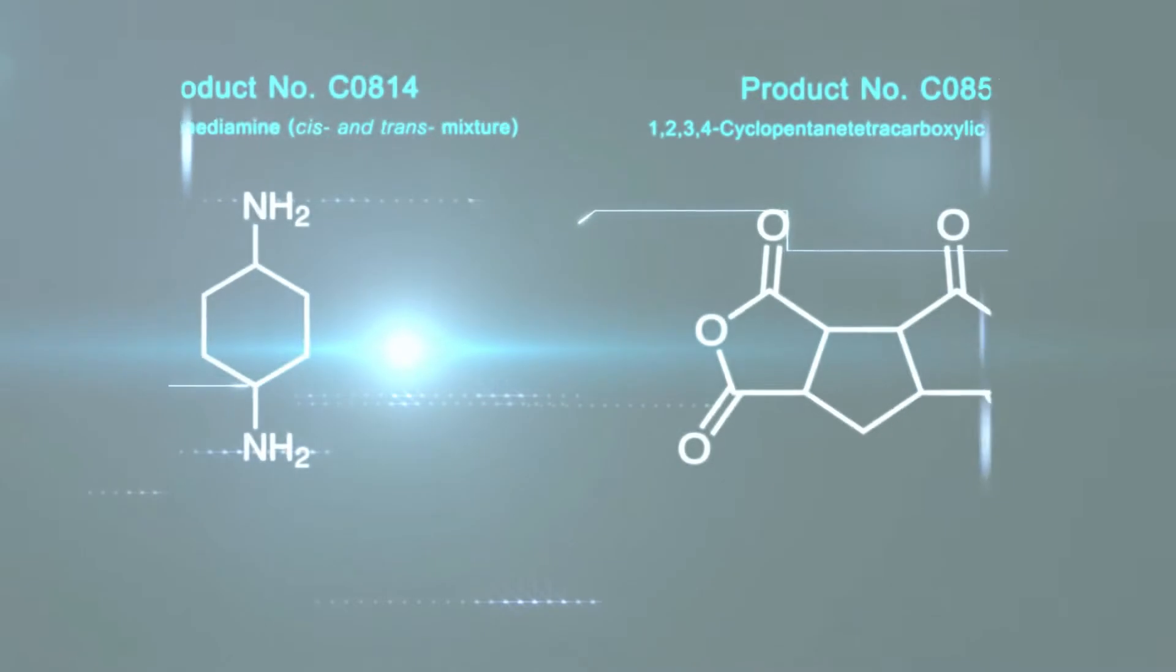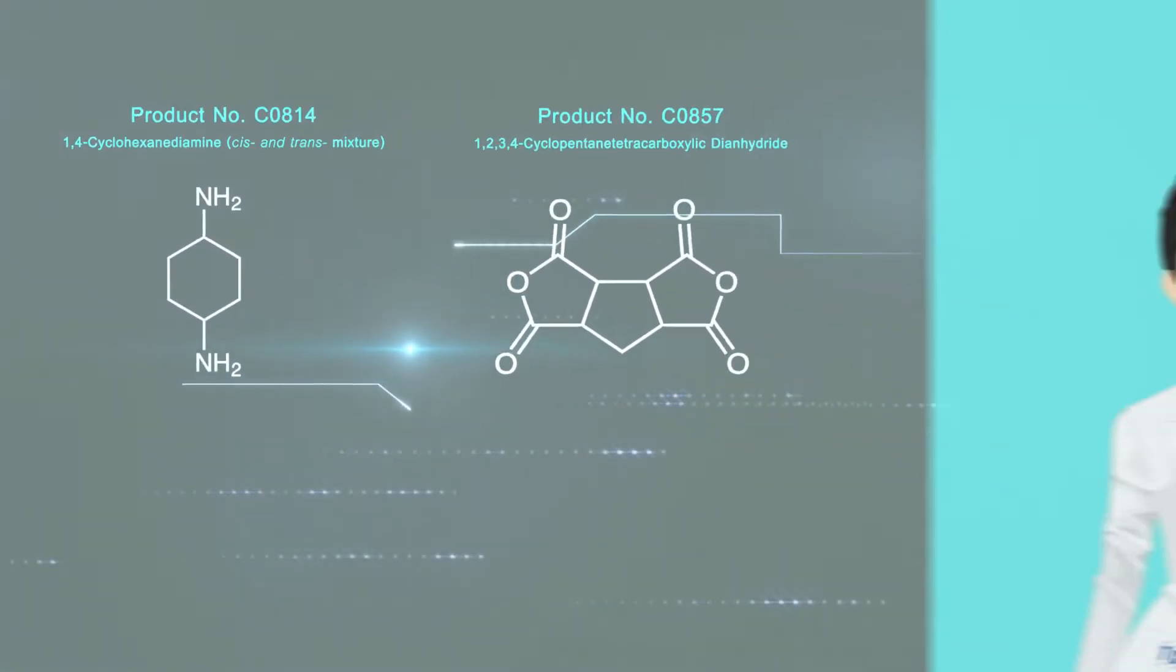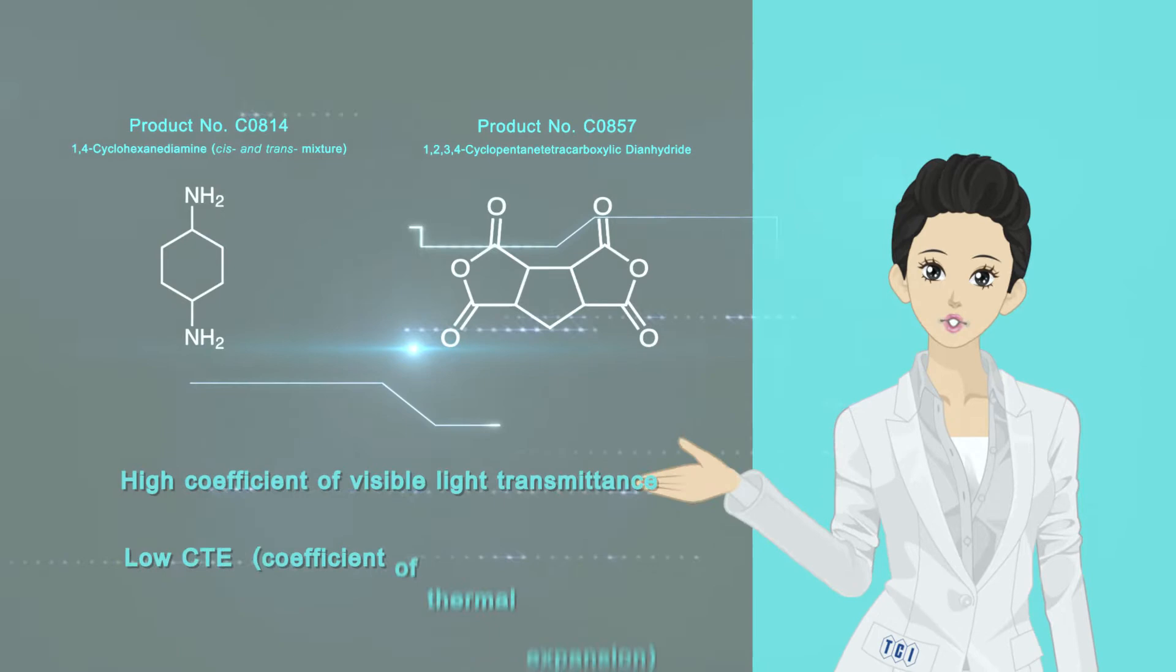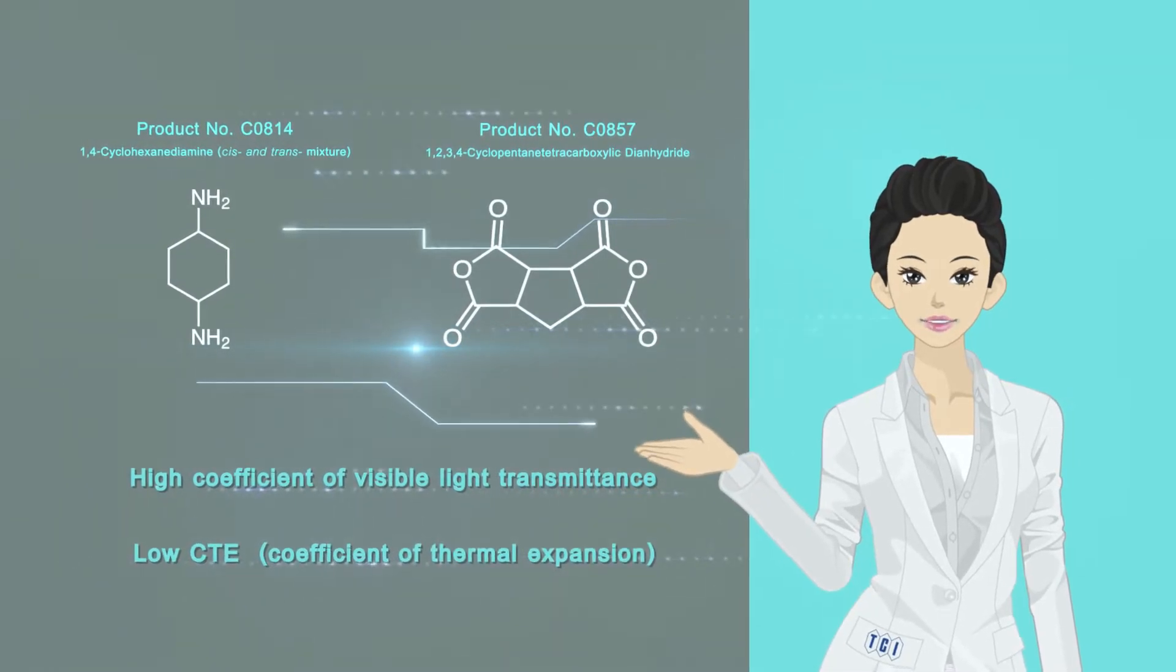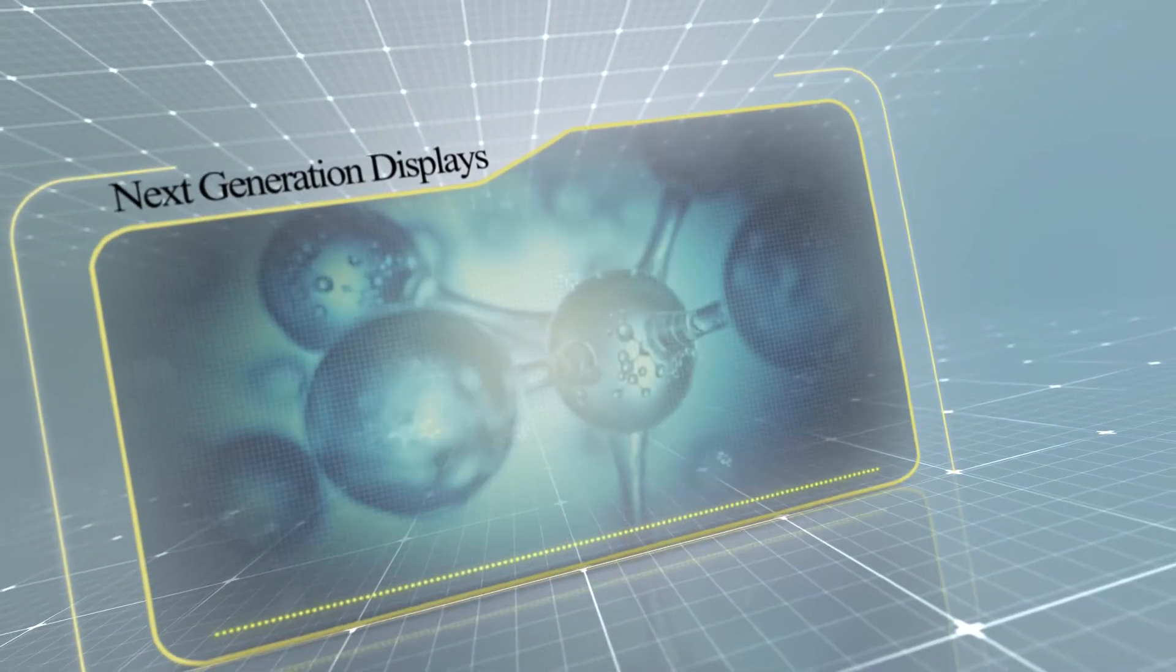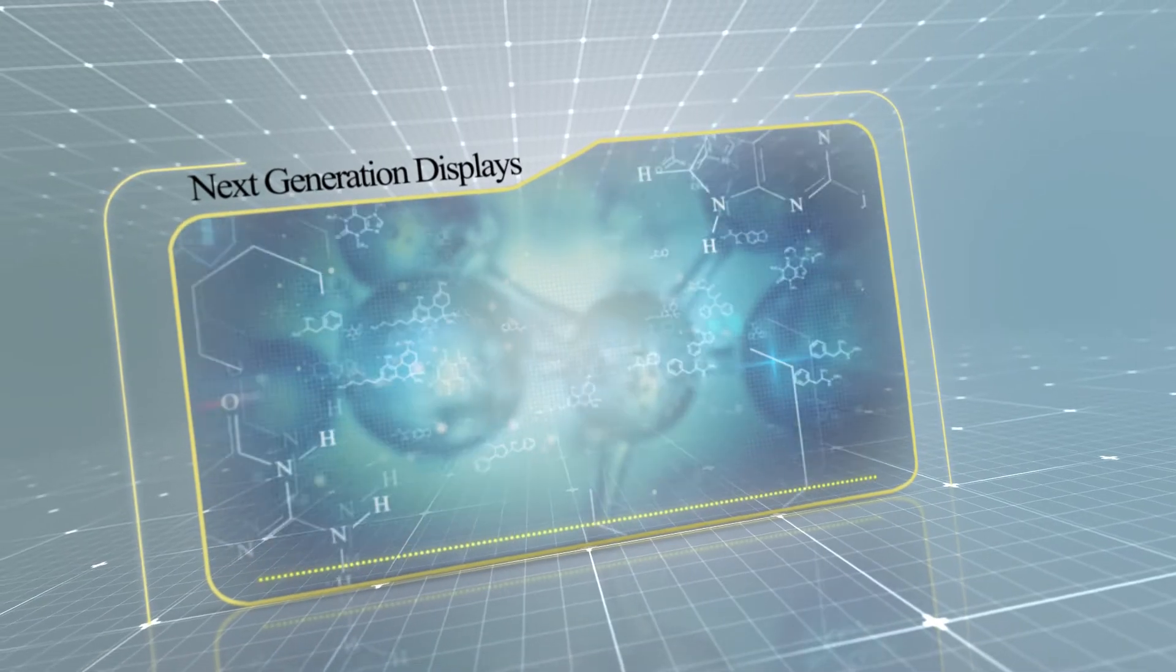In addition, TCI also offers raw materials for polyimides that exhibit a high coefficient of visible light transmittance and low CTE, so the polyimides are used in next-generation displays with transparency and flexibility.